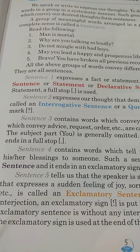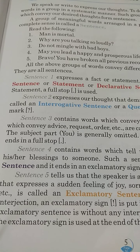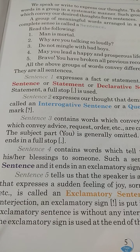The five kinds are: assertive sentences, also called statement or declarative sentences; interrogative sentence, or a question; imperative sentences; optative sentences; and exclamatory sentences. Now we go through them one by one.